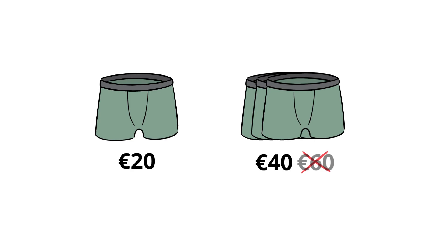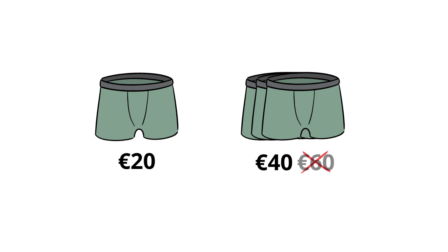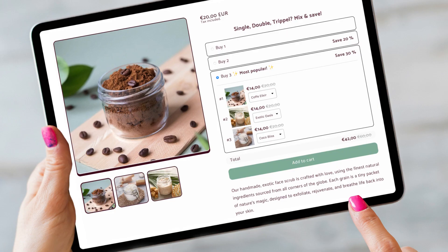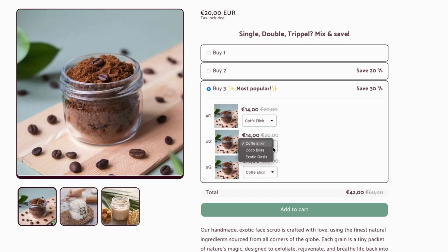Which offer would you choose? One underwear for 20 euros, or three underwears for 40 euros? Most people automatically choose the second offer. That's why you should always offer volume discounts on your products — it's the easiest way to increase your average order value.